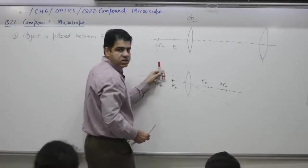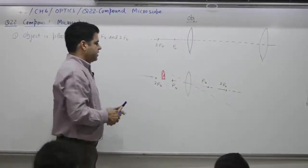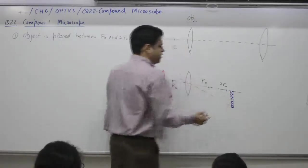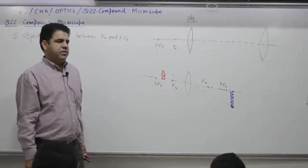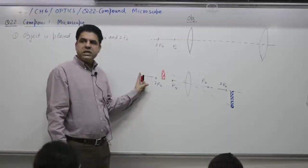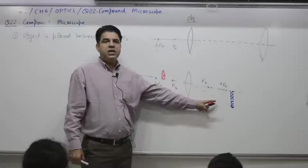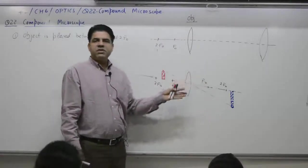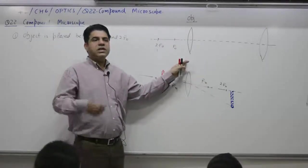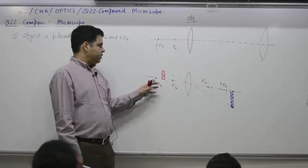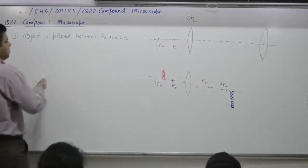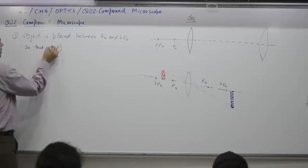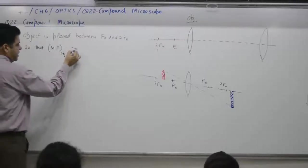Now, if you shift it towards, the image shifts towards right. That is why the image formed is enlarged, inverted and real. So, you need to place the object such that the first image formed is real, enlarged. Why not? Why not place it between 2F0 and infinity? Then the size will be less. What is the purpose of the first lens? To increase the size. That is why you place between F0 and 2F0. Object is placed between F0 and 2F0 so that magnifying power of objective is more than one.